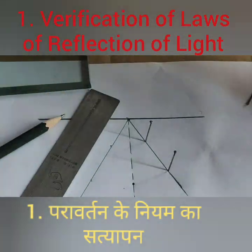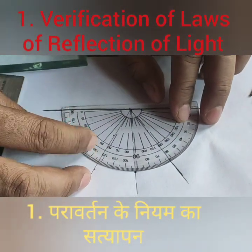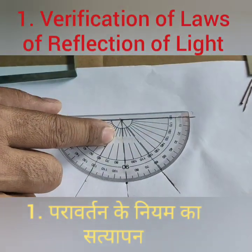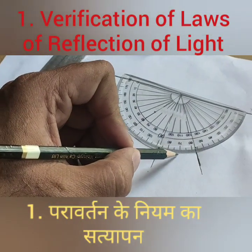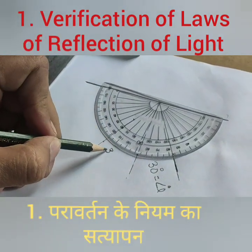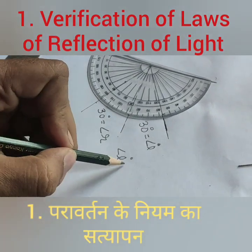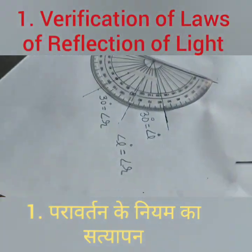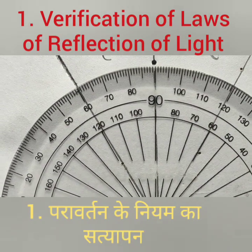Now, with the use of these two points I draw the reflected light ray. Then I measure the angle between the reflected ray and the normal, which is also 30 degrees. This is the verification of the laws of reflection of light — the angle of incidence is always equal to the angle of reflection. The other law is that the incident ray, reflected ray and normal all lie in the same plane, that is, in the plane of the paper.